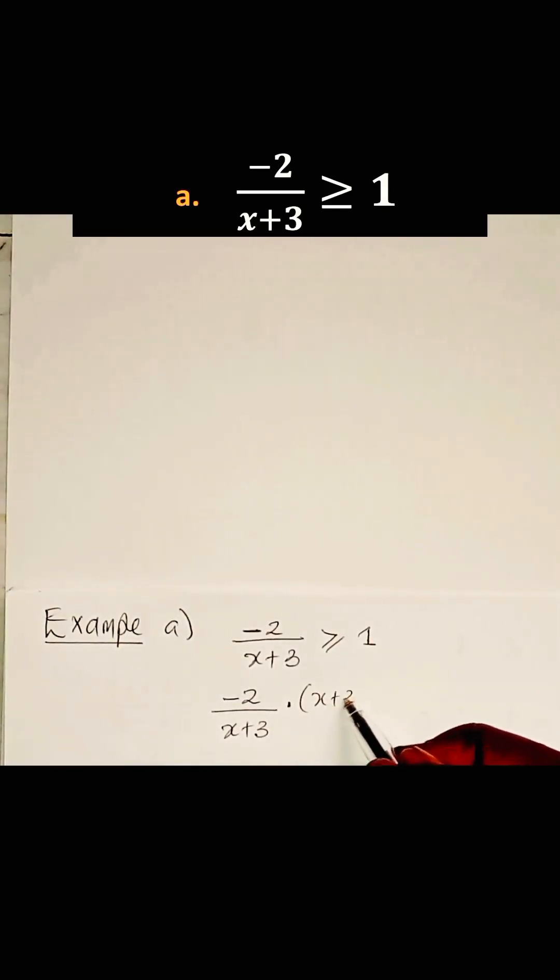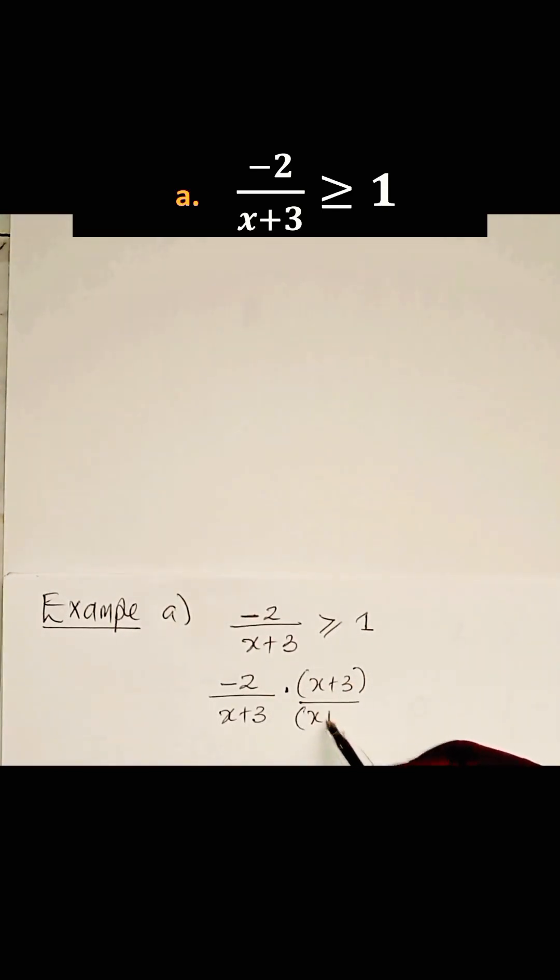We can multiply by (x+3)/(x+3). That's greater or equal to 1. We haven't changed anything because (x+3) divided by (x+3) is 1.